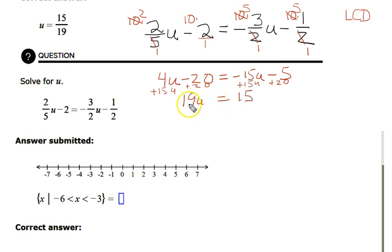Then to solve for a positive u, we divide by the numerical coefficient, the 19. And then u equals 15 19ths. And we're almost finished.